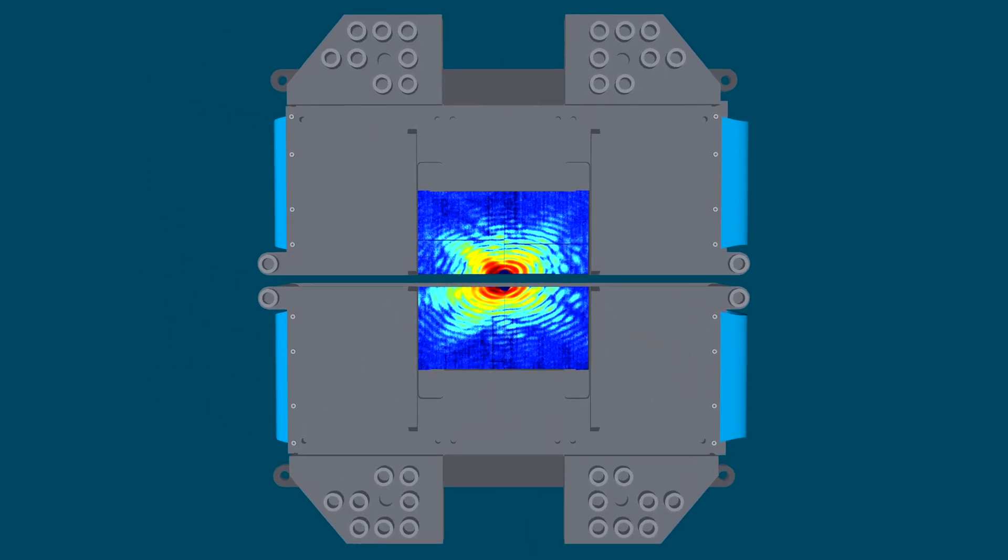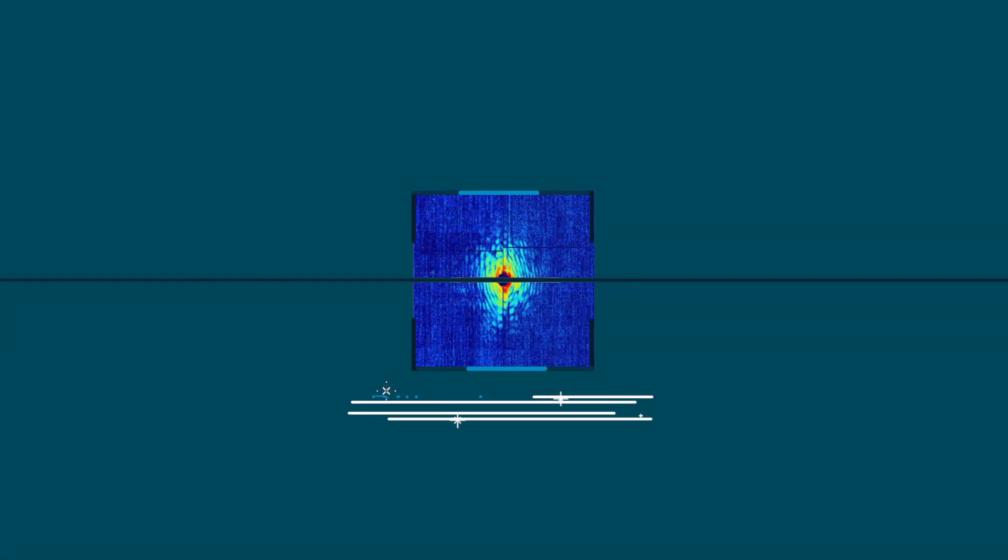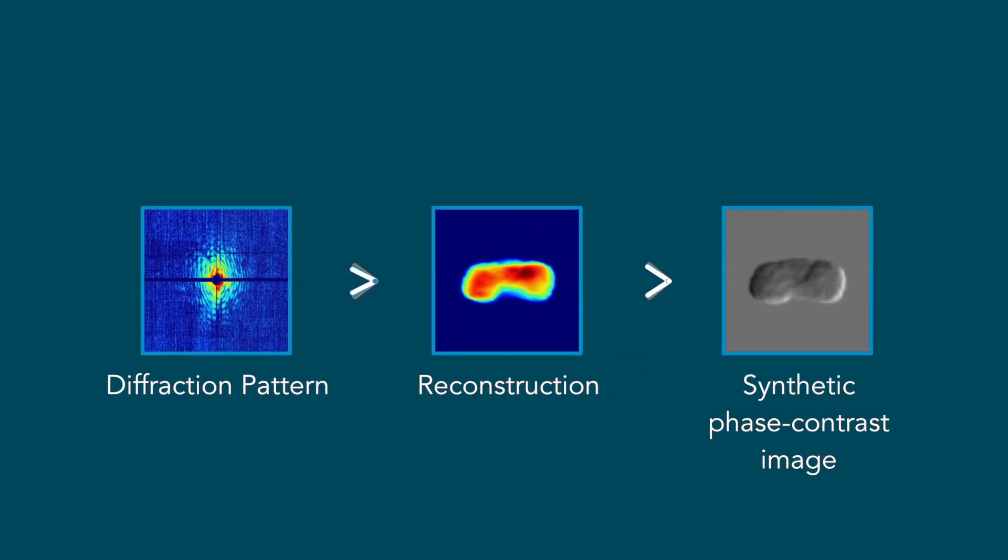Finally, the scattered photons are collected on a detector. Scientists can then use the pattern on the detector to reconstruct the image of the cell.